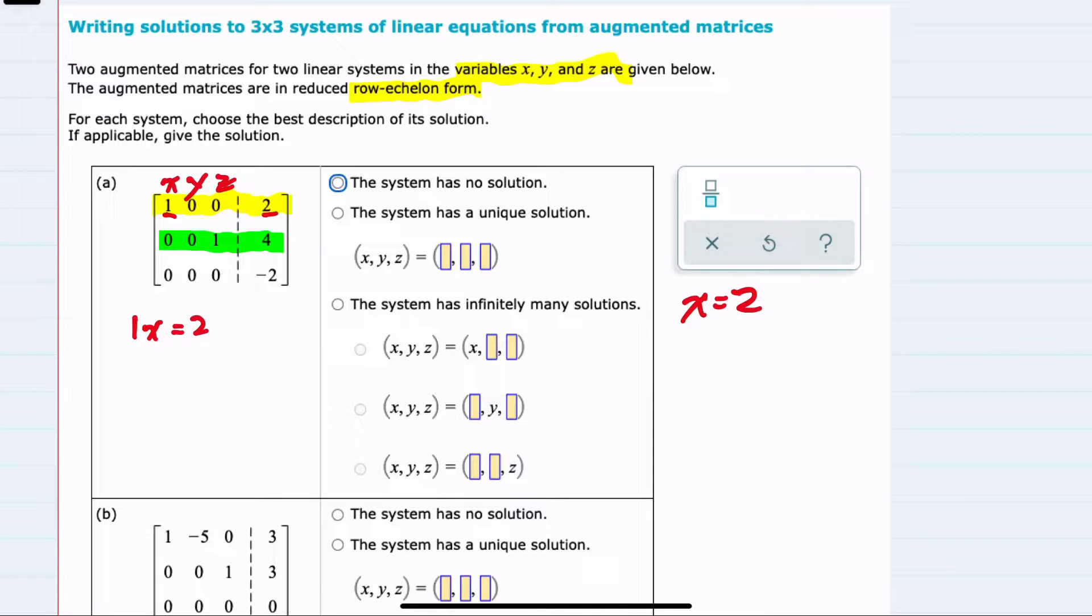From the second row, we have a 1 in the z column. So 1z equals, this time that far row is a 4. So we found our z value equals 4.